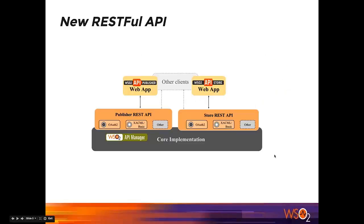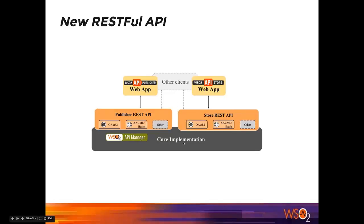This is a high-level diagram of the APIs. We have the API manager and the OSGI layer underneath. On top of that, we have two separate web applications — these are JAX-RS services. One API is for the publisher and the other is for the store. In a single-node setup, both APIs overlap and can be accessed simultaneously. In a distributed deployment, you can split these two web apps into separate nodes — the publisher API in one node and the store API in another.